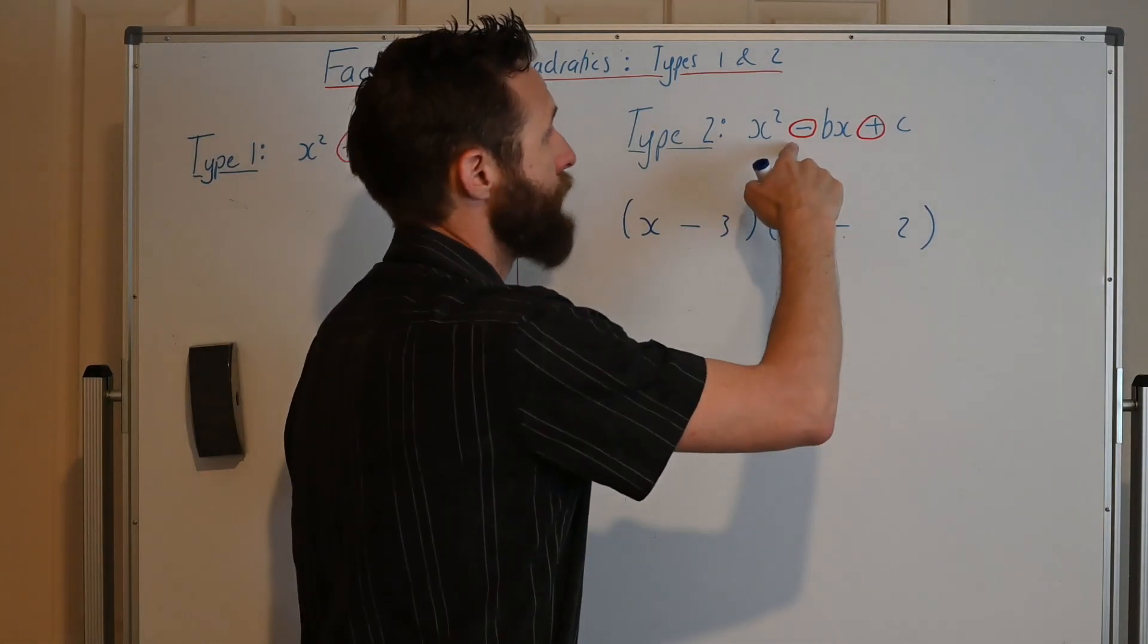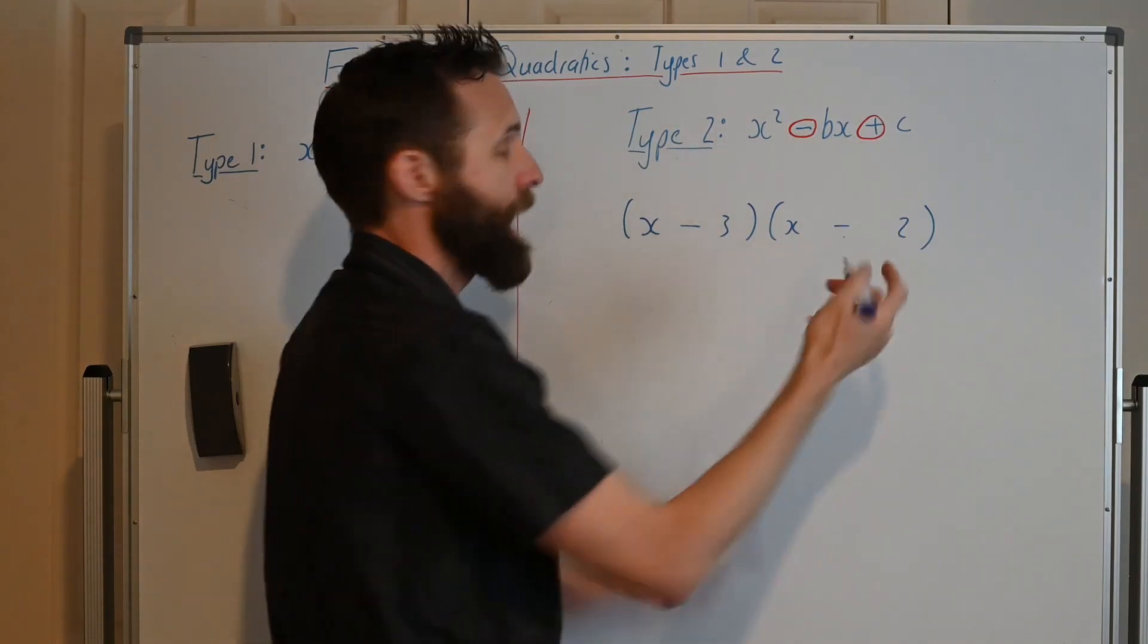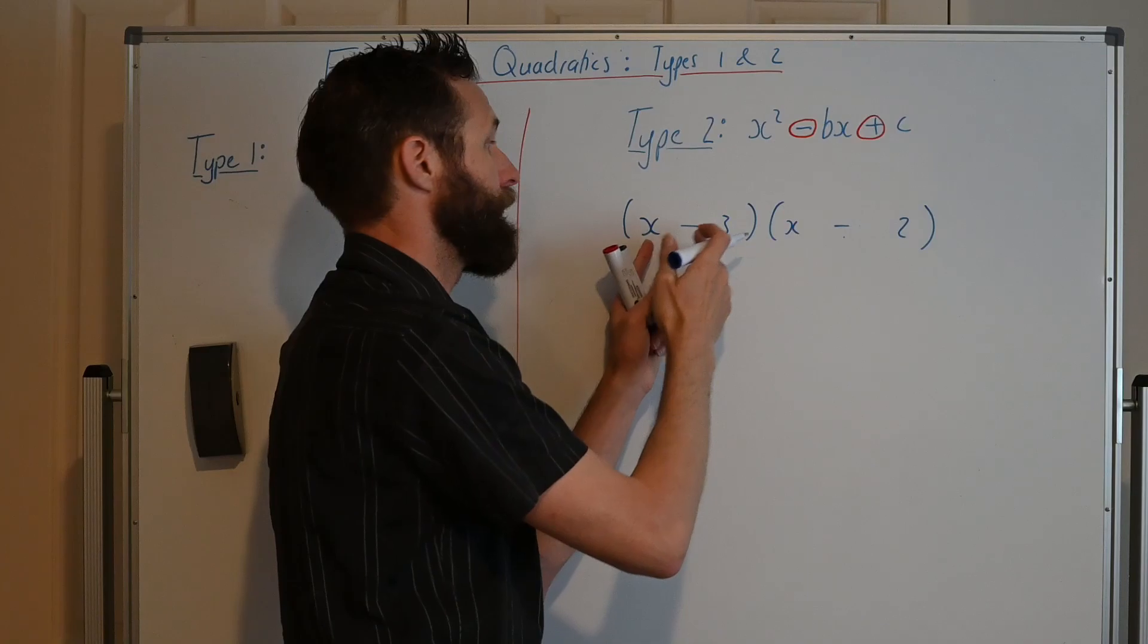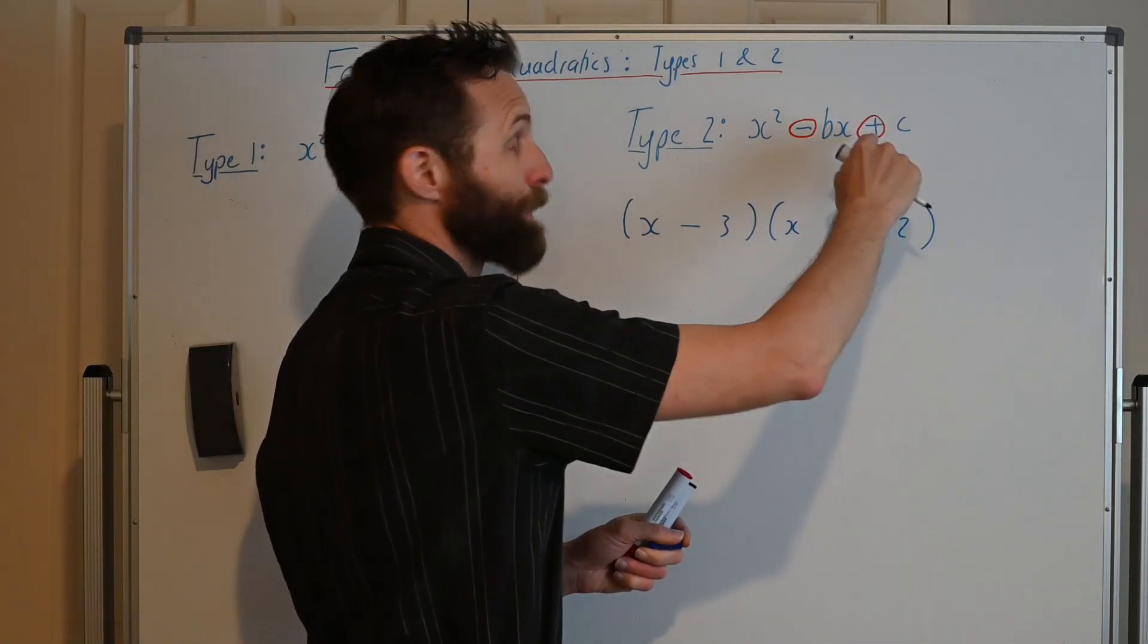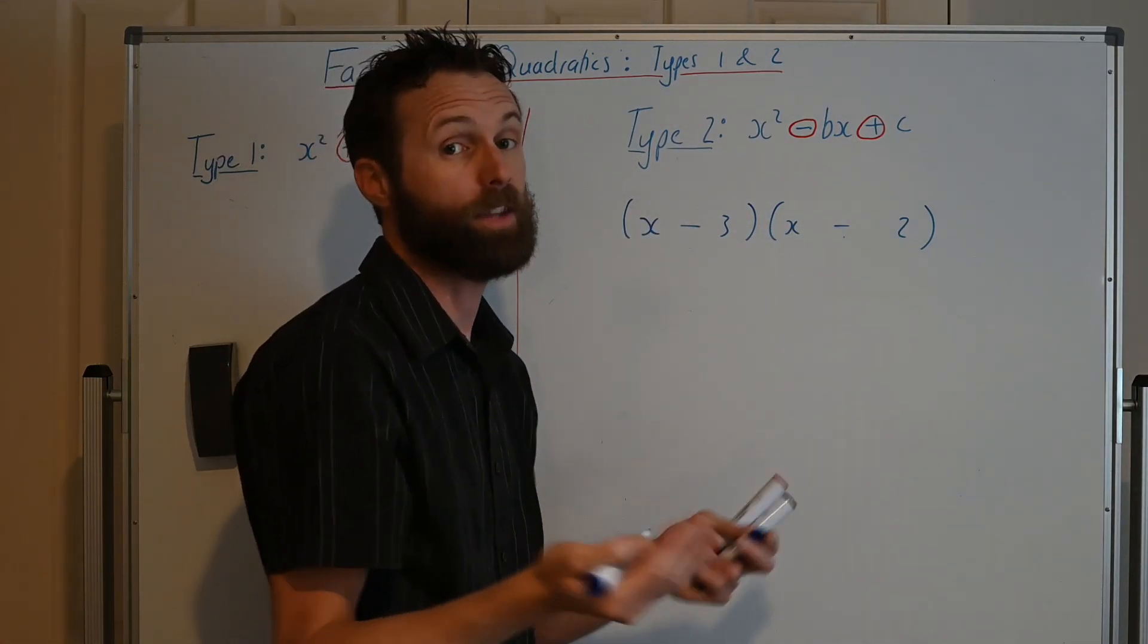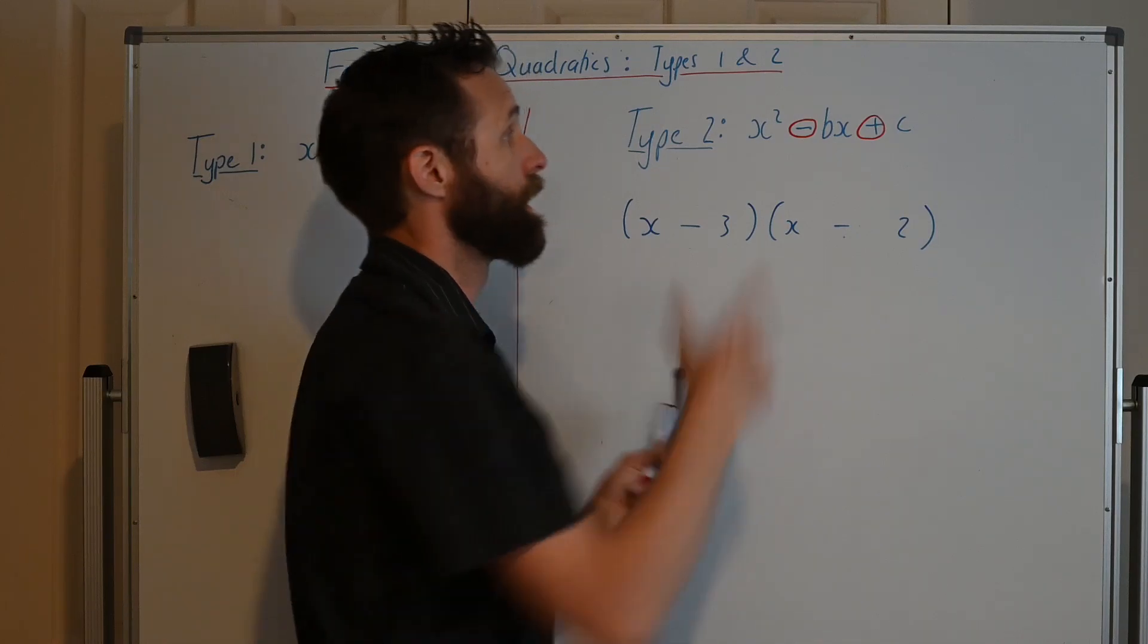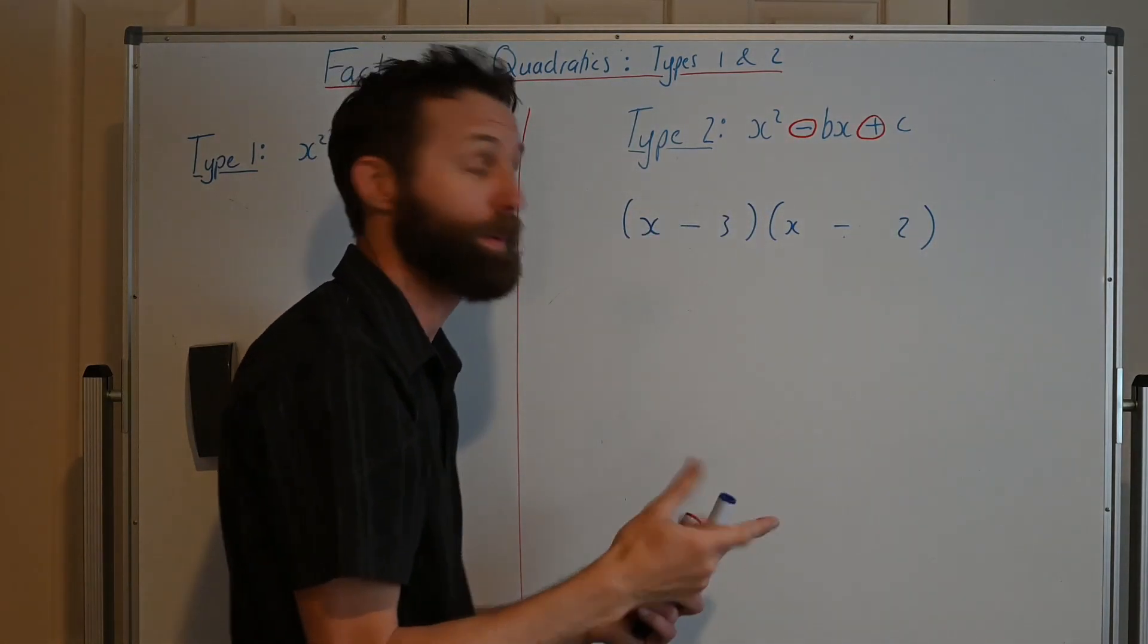So when you have a minus and a plus in the x² - bx + c, that means when you factorize you're going to have two brackets with a minus in the middle. So minus bx plus c leads to two minuses in the brackets. That's the rule that you need to remember for this. Minus plus, double minus when you factorize.